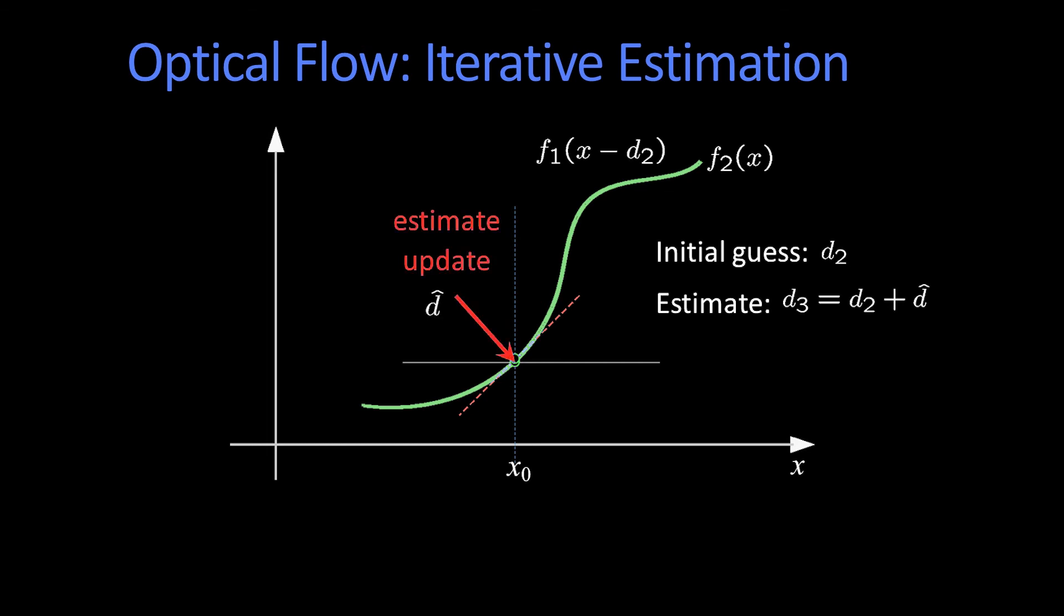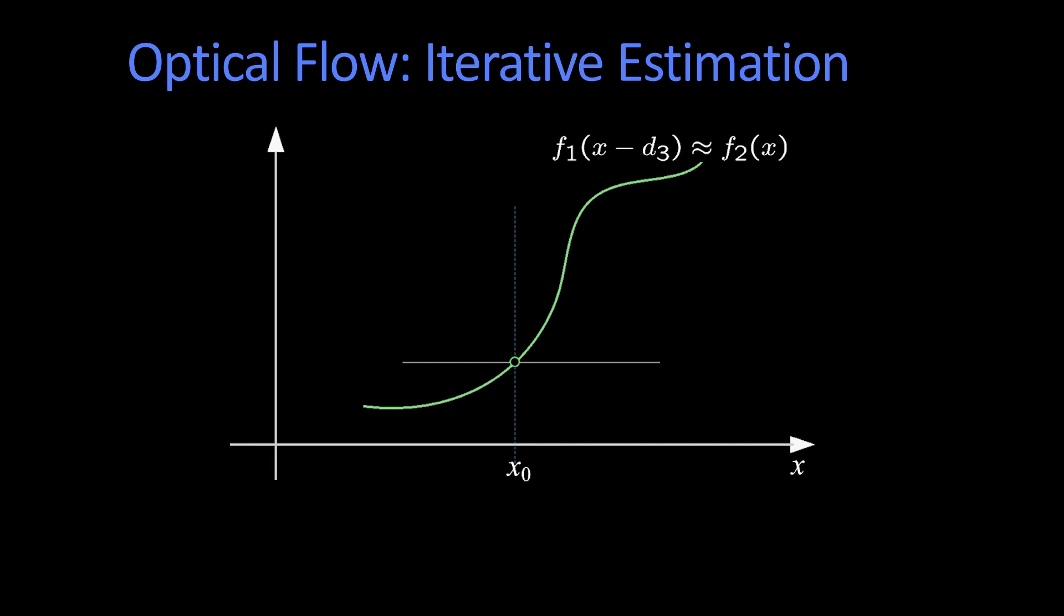Estimate tiny little d hat this time, and voila, it turns out that f1 of x minus d3 is almost exactly f2 at this point.